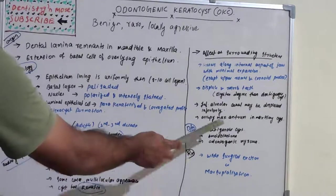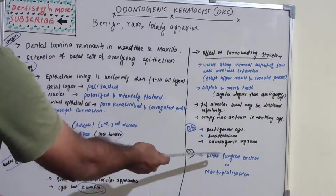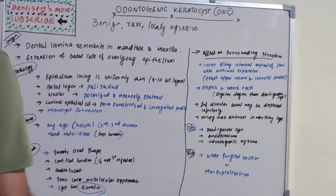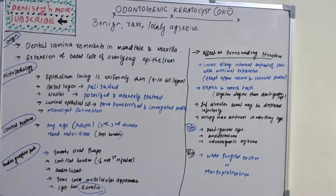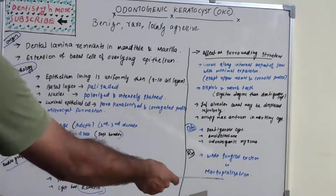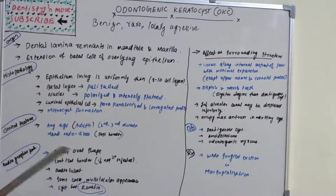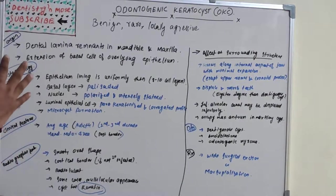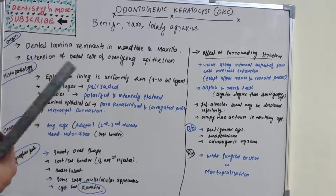The most common differential diagnoses are dentigerous cyst, ameloblastoma, and odontogenic myxoma. Treatment can be done using wide surgical excision to avoid recurrence, and marsupialization can also be applied.